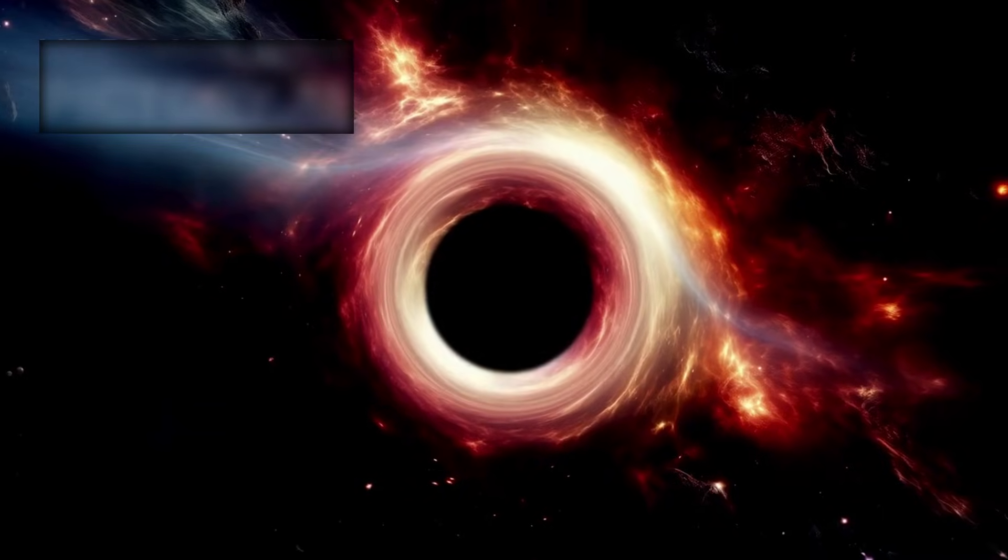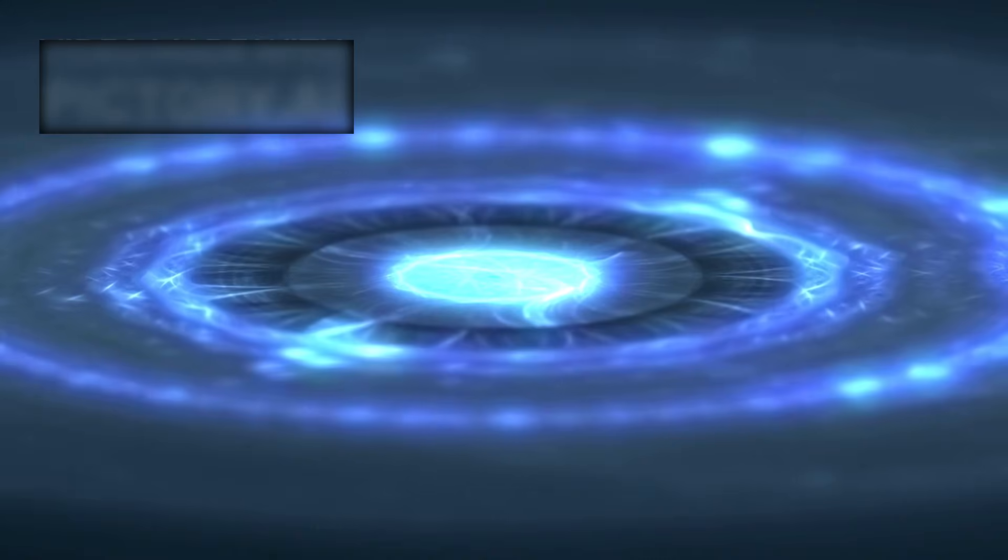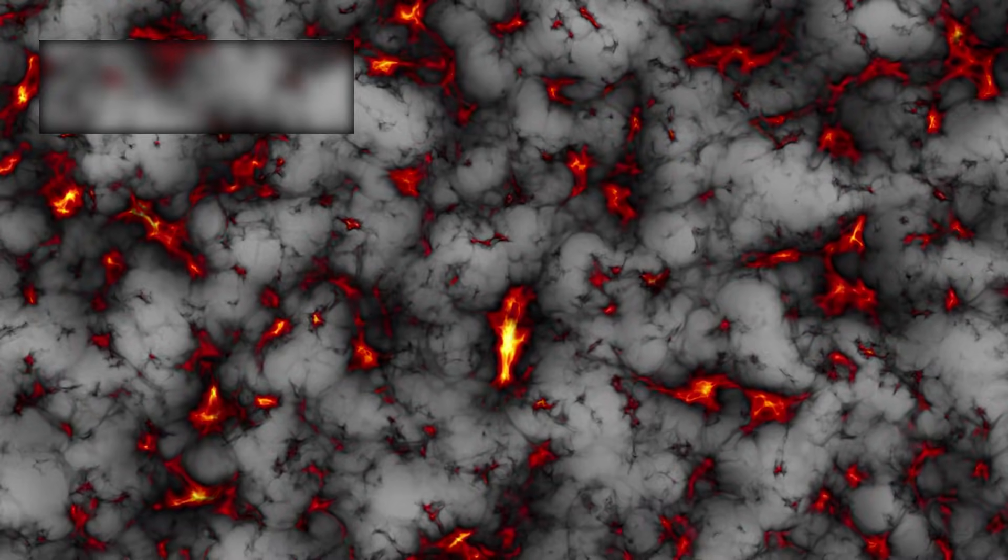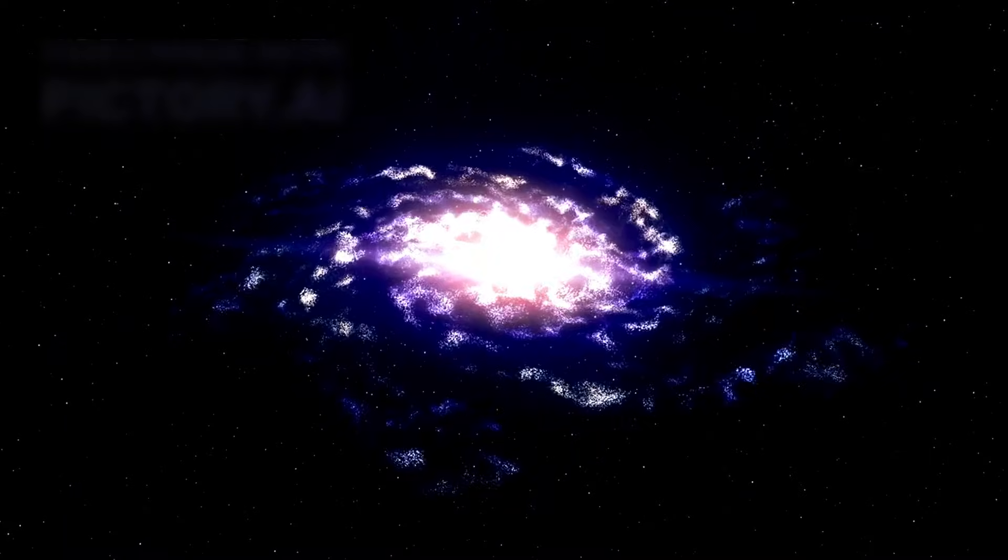Astronomers have detected six massive galaxies hidden deep within the early universe. Not faint smudges, not fragile protostructures, but enormous, dense, fully assembled galaxies. Galaxies so large, so evolved, and so unexpectedly mature that according to modern cosmology, they should not exist at all.